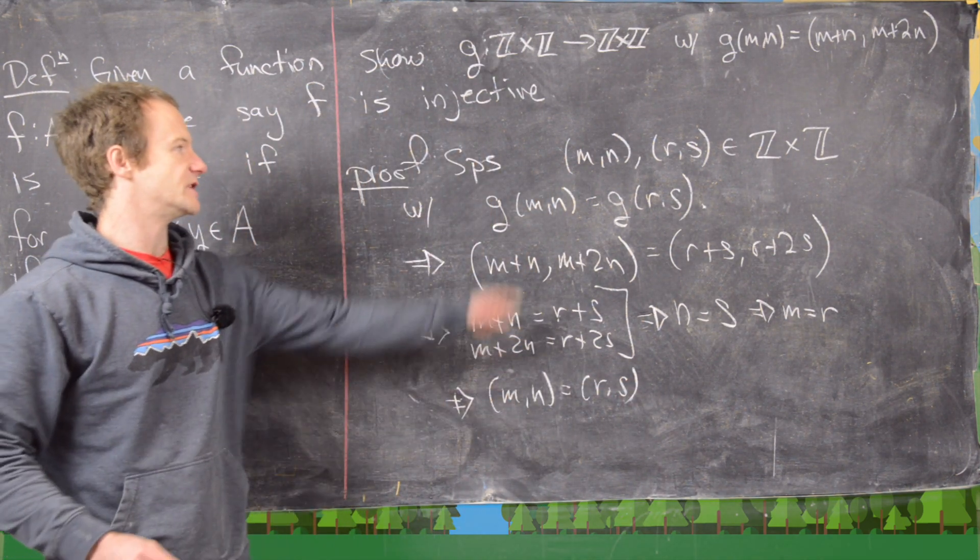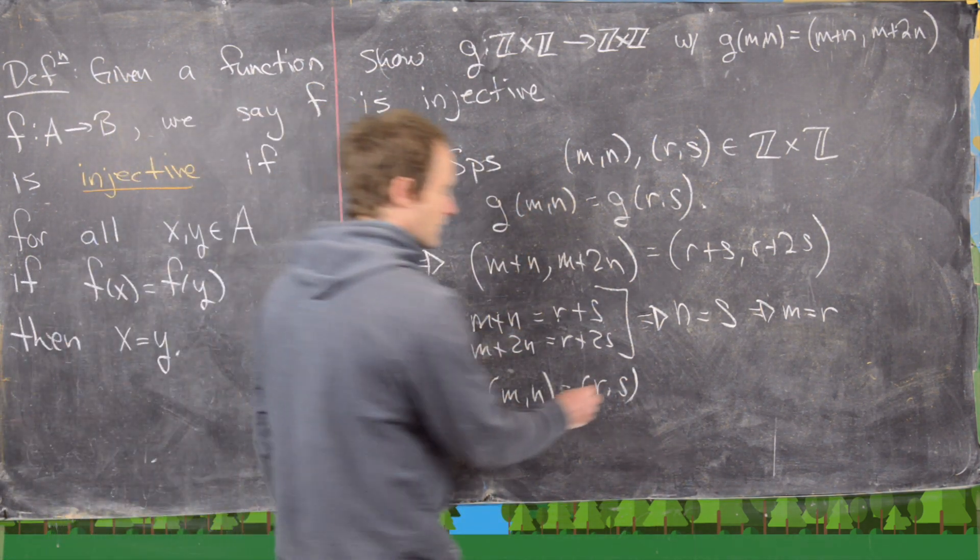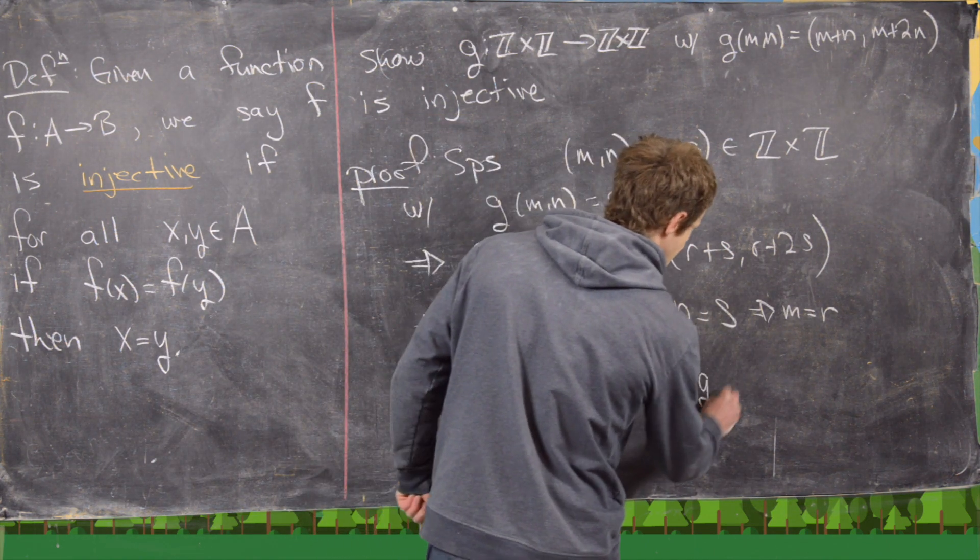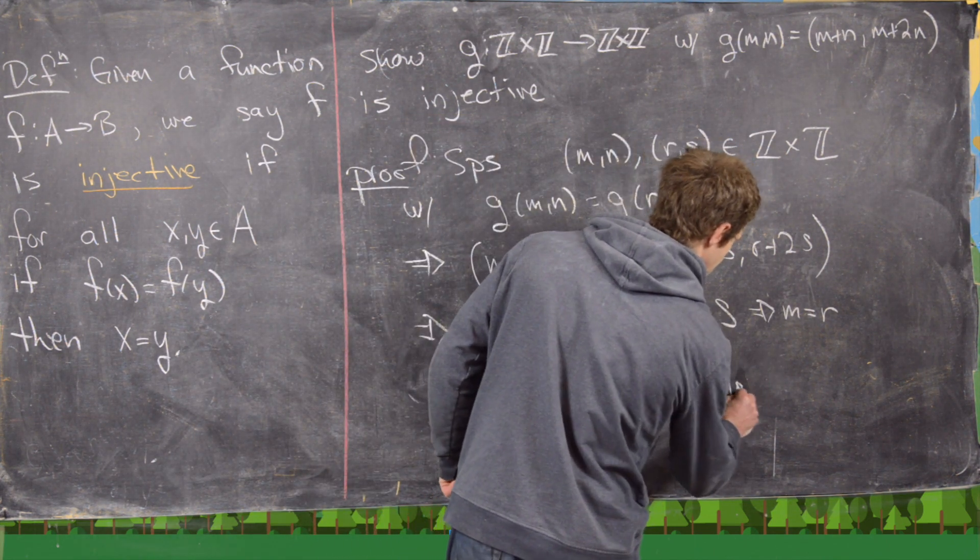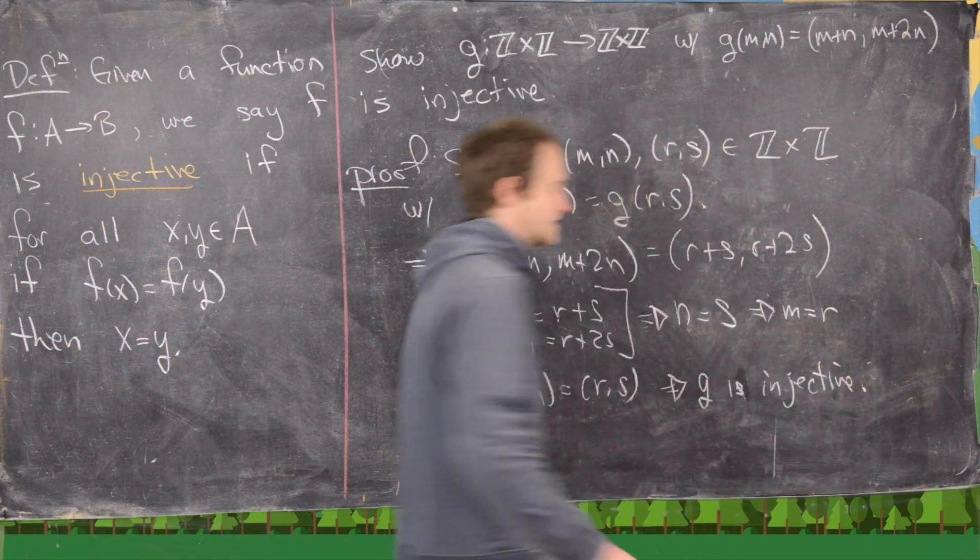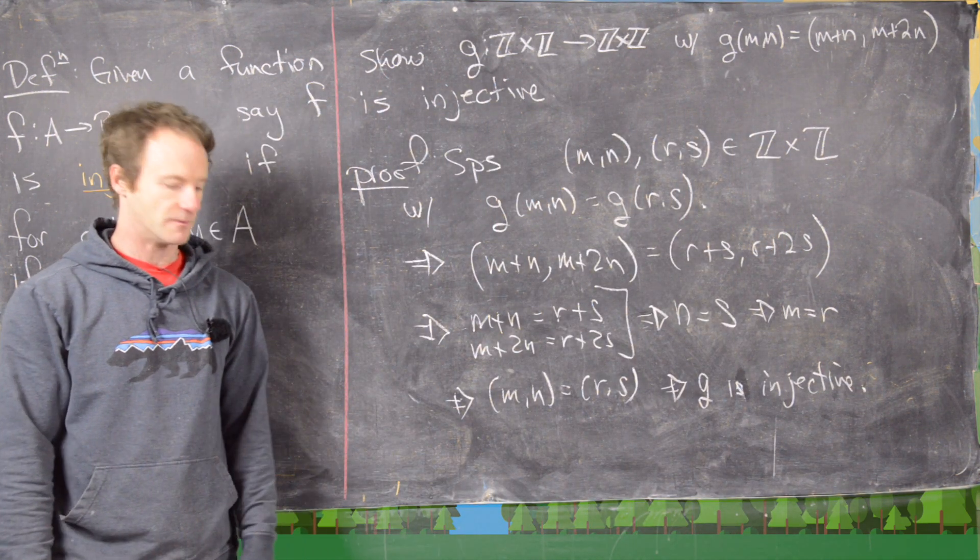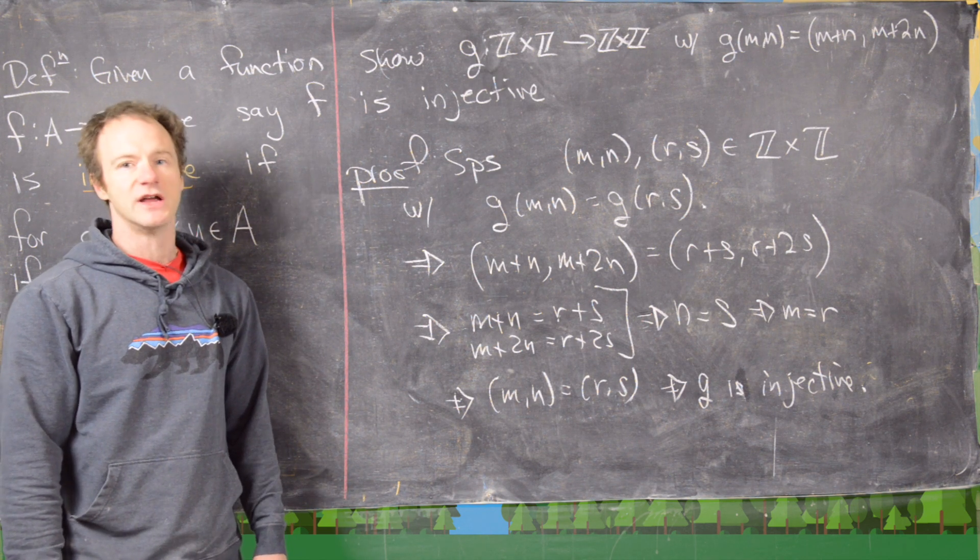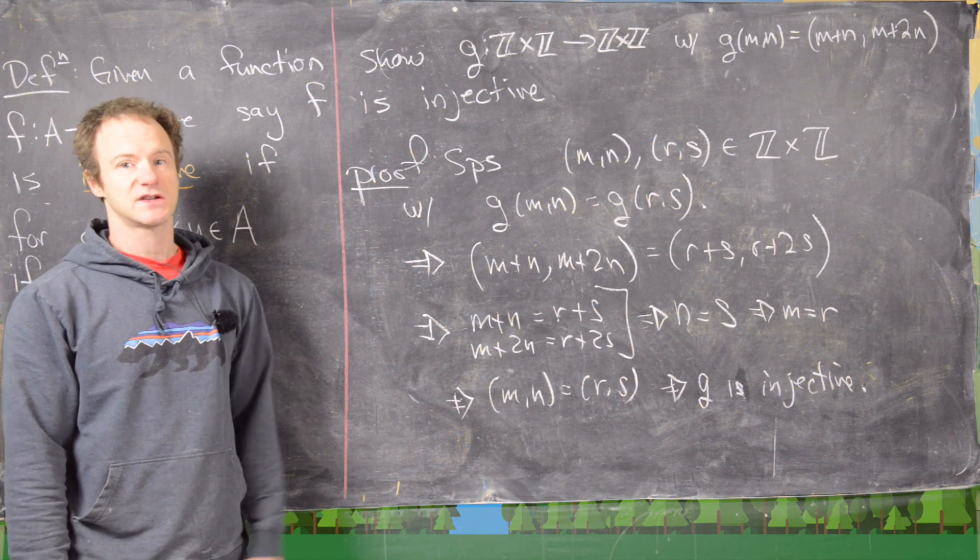But then, if n equals s and m equals r, that means mn equals rs. In other words, the inputs were the same from which it follows that g is injective, which is exactly what we wanted to show. So I think this is a good place to end the video.